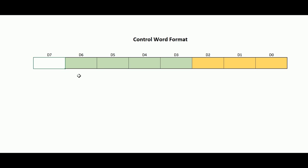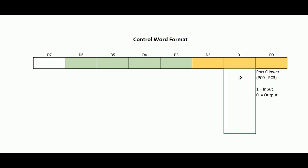Starting with bit D0: this bit is used for Port C lower (PC0 to PC3). If D0 is 1, PC0 to PC3 will act as an input port; if D0 is 0, it will act as an output port. You can remember this: 1 looks like 'I' for Input and 0 looks like 'O' for Output. Bit D1 is used for Port B — if D1 is 1, Port B functions as an input port; if D1 is 0, it functions as an output port.